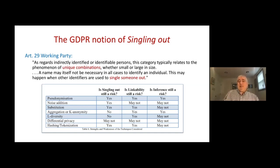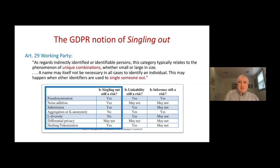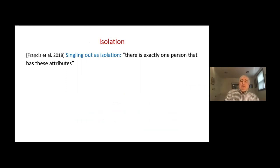Looking at their table: with respect to k-anonymity they say singling out is no longer a risk, so k-anonymity eliminates the risk. With respect to differential privacy they say singling out 'may not' be a risk. There's something strange and dissatisfying here — we're accustomed to thinking of differential privacy as a much stronger privacy measure than k-anonymity, yet the Article 29 Working Party seems to think k-anonymity is better protection against singling out than differential privacy. We're going to revisit this table at the end of the talk.